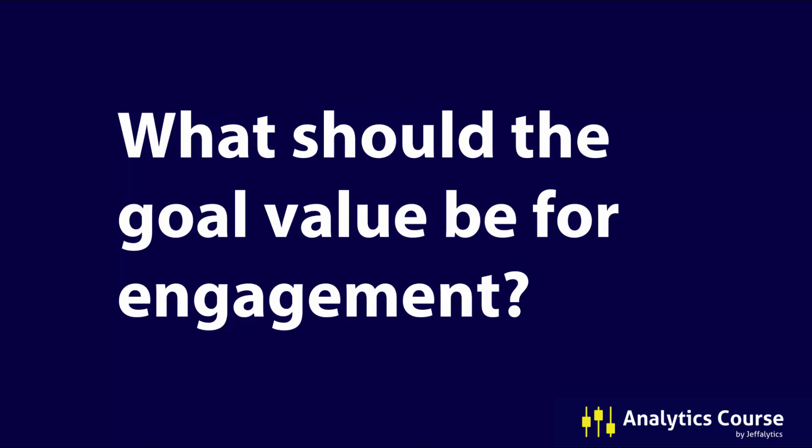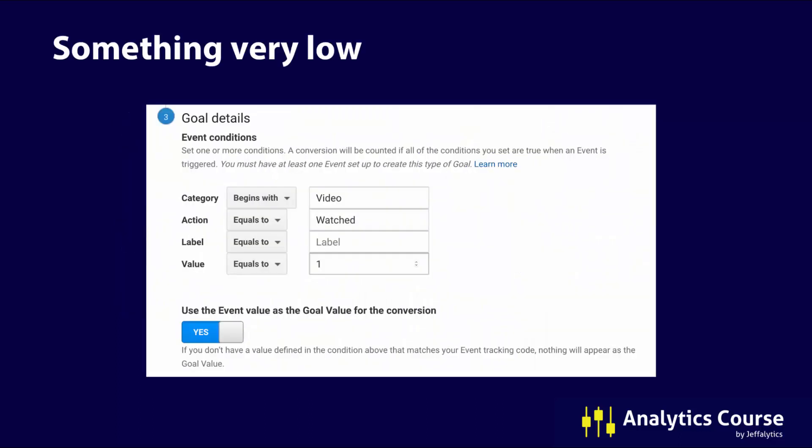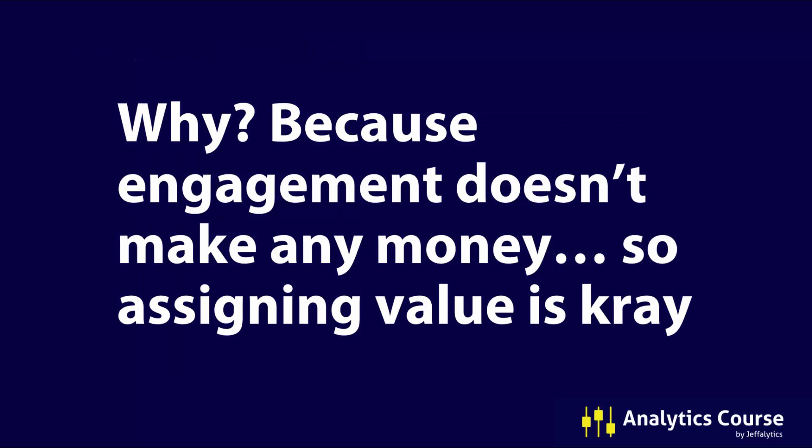What should be the goal value for tracking engagement? I would say something very low. If you're using event tracking for micro goals like watching a video, I would say the value should be $1 at most — zero to $1 — because that's going to assign a proper value. People might watch a lot of videos, but that does not mean they're making money for you. For example, if you're Netflix you could have a million of these goals, but for everybody else doing marketing, lead generation, and e-commerce, video watching is not something you want to assign a lot of value to because engagement doesn't make any money.